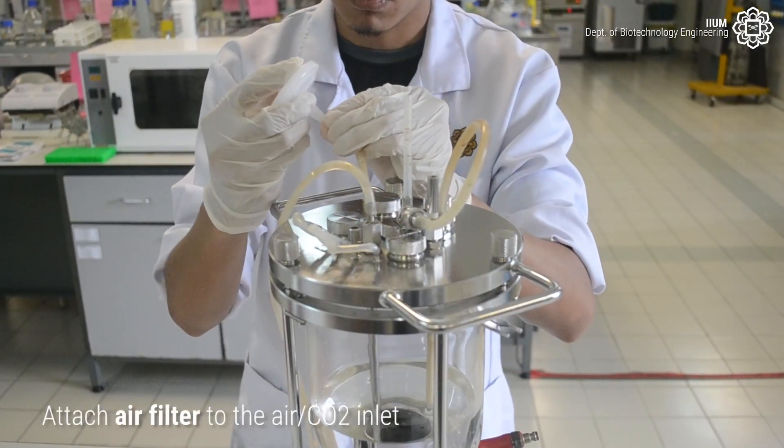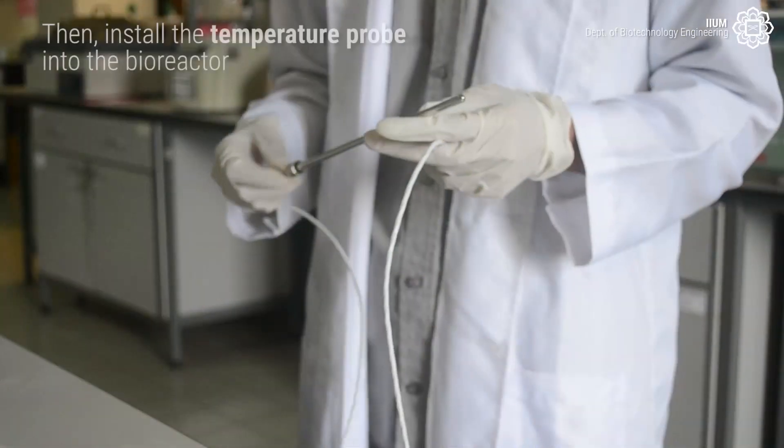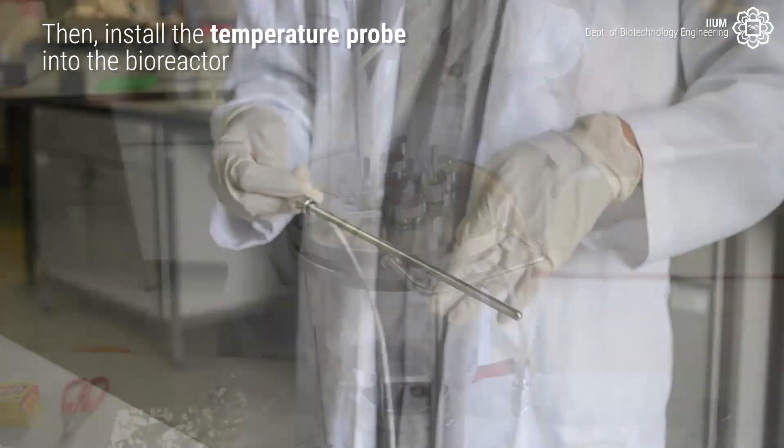Attach air filter to the air or CO2 inlet. Then install the temperature probe into the bioreactor.